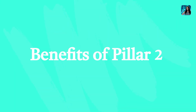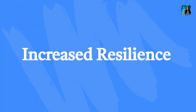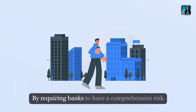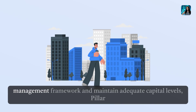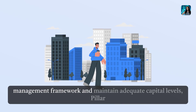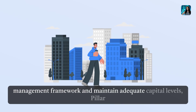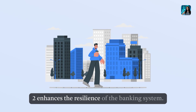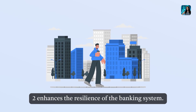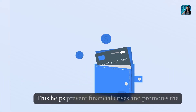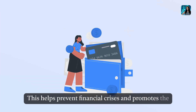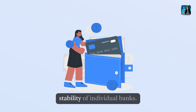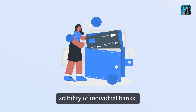Benefits of Pillar 2: Increased Resilience. By requiring banks to have a comprehensive risk management framework and maintain adequate capital levels, Pillar 2 enhances the resilience of the banking system. This helps prevent financial crises and promotes the stability of individual banks.